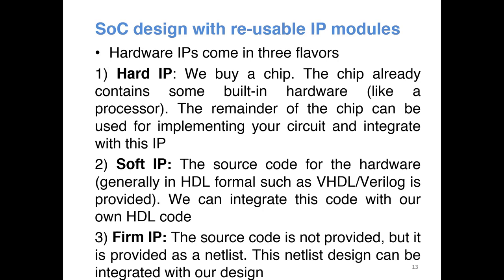The third category is called firm IP. This is similar to using compiled source code in software — you won't have direct access to the HDL language. Instead, they will provide you a netlist in a format such as EDIF or a custom netlist format, which you cannot decode to find out what is actually happening. However, the implementation tool can understand what this netlist is describing and will be able to interface this netlist with your custom code. You have the netlist and you know the inputs and outputs from this particular IP. In our course we will be extensively using this IP-based development flow.